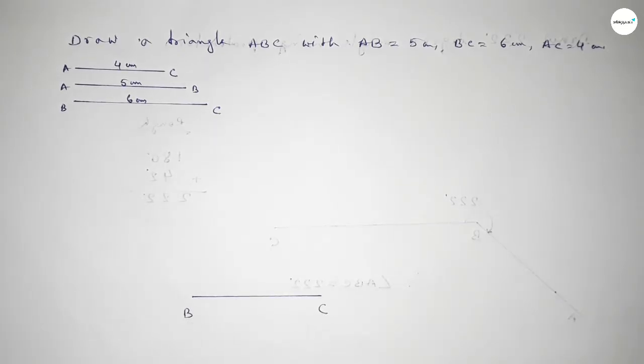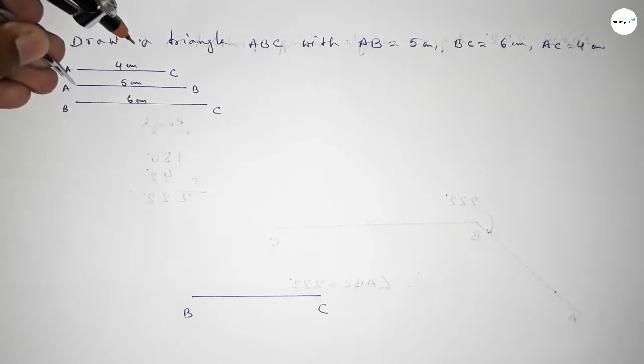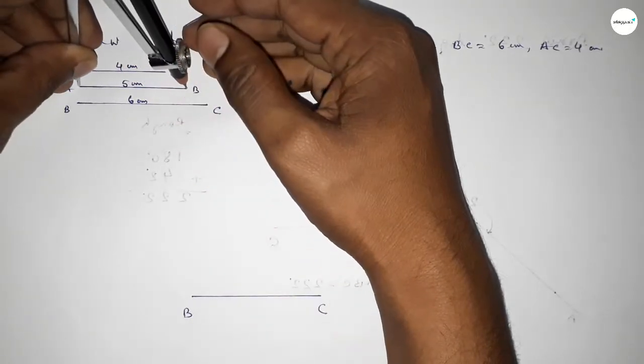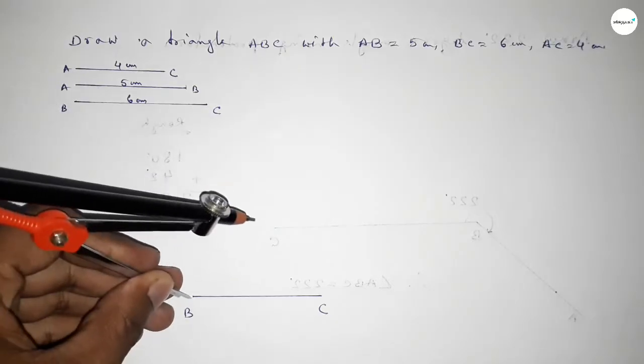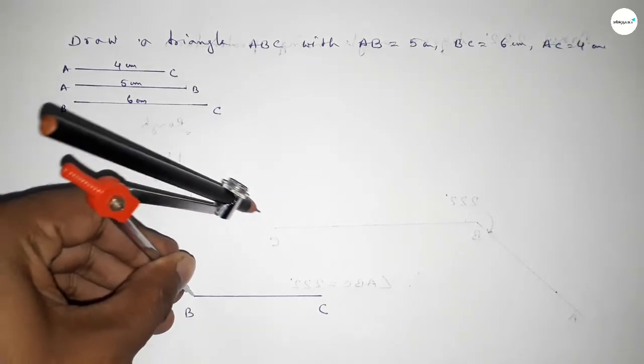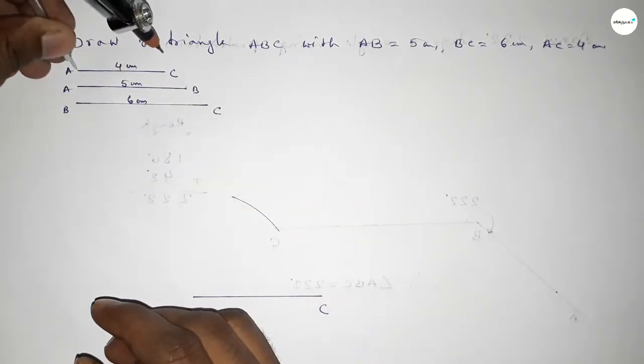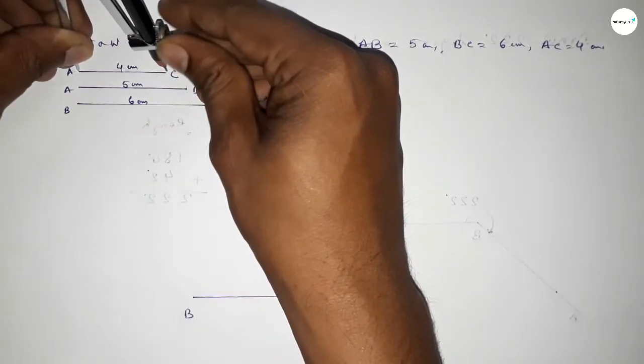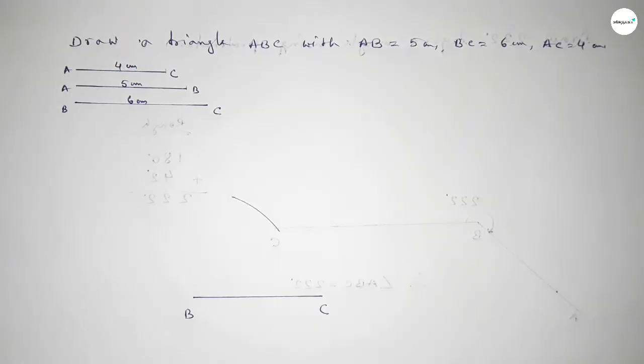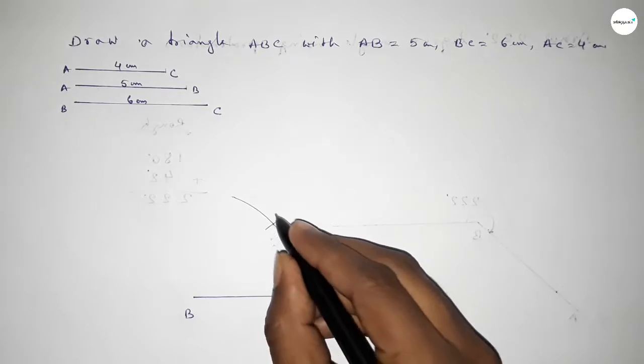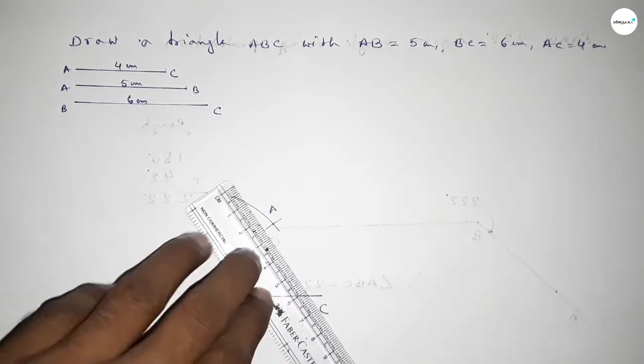Now taking the length AB 5 centimeter by using compass by this way and putting the compass on the point B and drawing here an arc using compass. And taking the length AC 4 centimeter and putting the compass on the point C and cut here, so both the curves intersect at a point A.